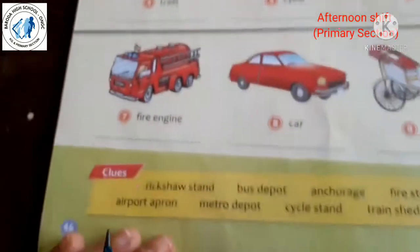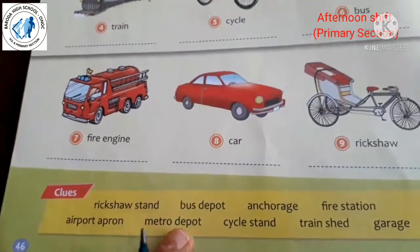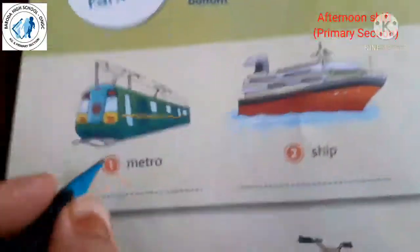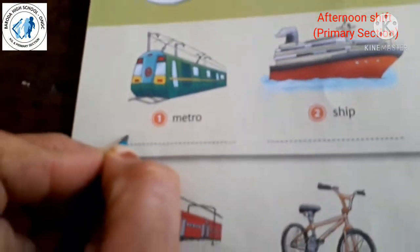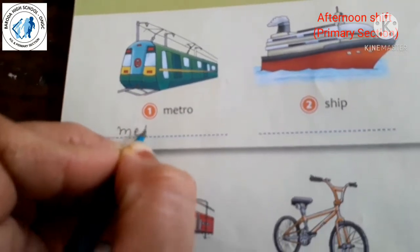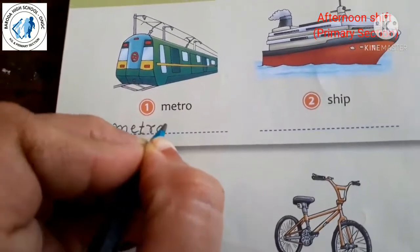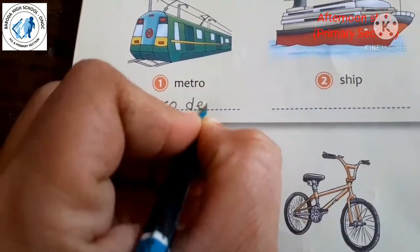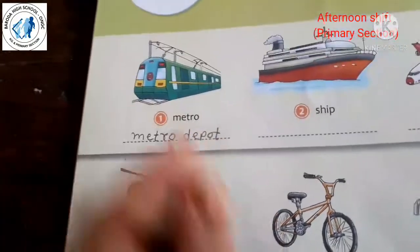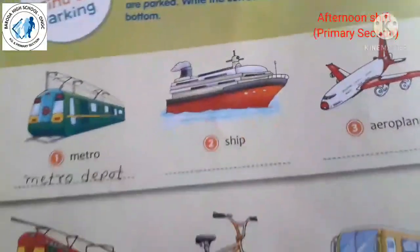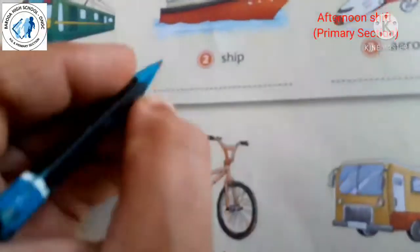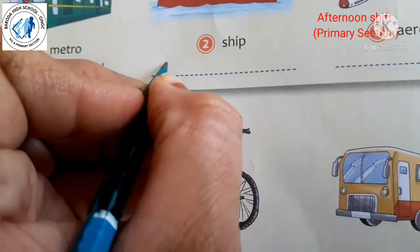The first vehicle is the metro — where the metro is parked is called the metro depot. Write down 'metro depot' for number one.